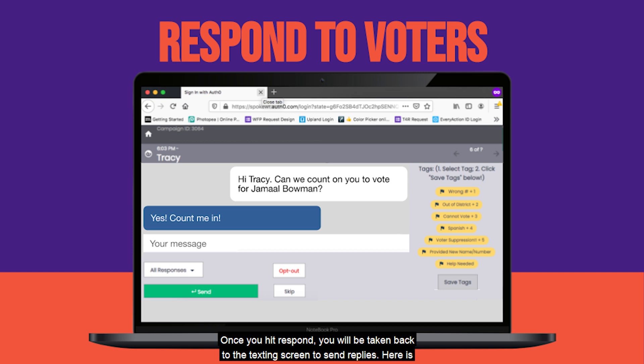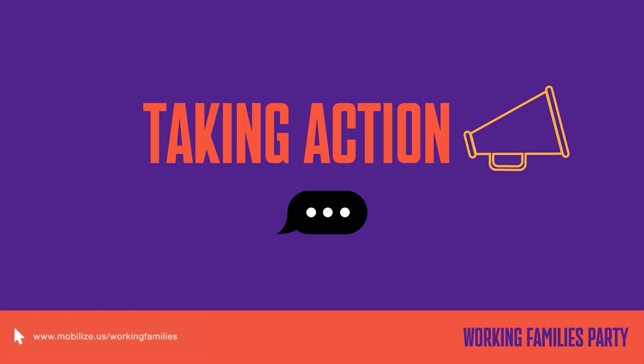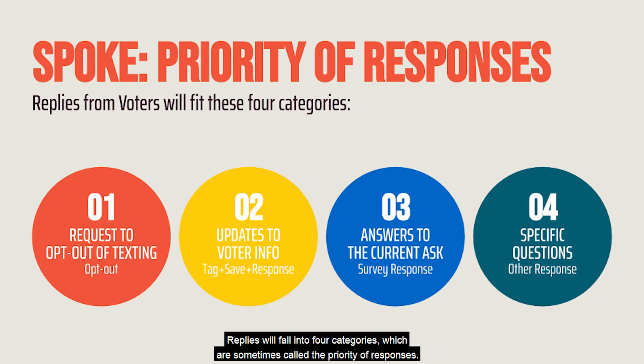Once you hit respond, you will be taken back to the texting screen to send replies. Here is where you will be able to choose a survey response and collect data from the voter. Depending on the response, you will take action. Replies will fall into four categories, which are sometimes called the priority of responses.